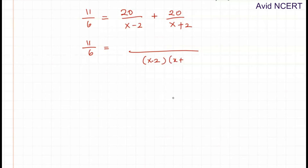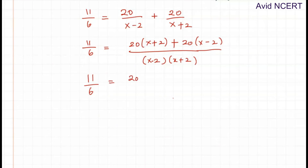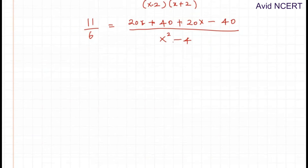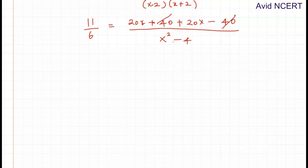So 11/6 equals — taking the LCM of (x minus 2) and (x plus 2) — we cross multiply: 20 times (x plus 2) plus 20 times (x minus 2), all divided by (x plus 2)(x minus 2). Expanding: 20x plus 40 plus 20x minus 40, divided by x squared minus 4. The plus 40 and minus 40 cancel out, giving 40x over (x squared minus 4).